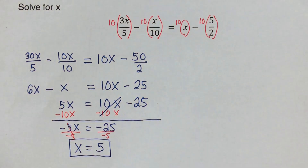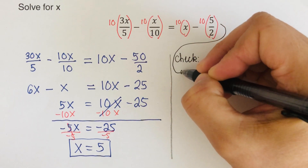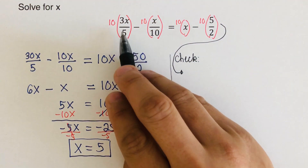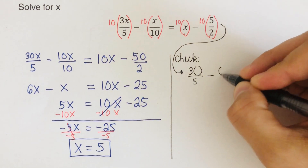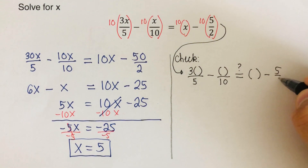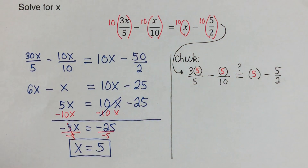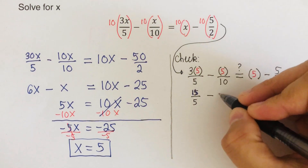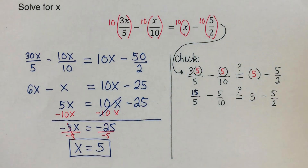To check, we plug x equals 5 back into the original equation. We substitute 5 everywhere x appears: 3 times 5 over 5, minus 5 over 10, should equal 5 minus 5 over 2. Computing: 15 over 5 minus 5 over 10.